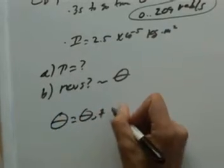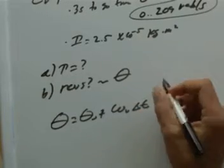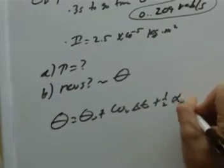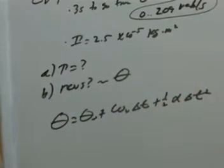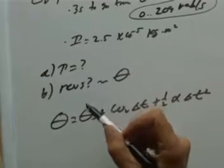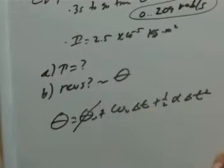We know that theta is equal to theta zero plus omega zero delta t plus one half alpha delta t squared, something like that. It's going to start at some arbitrary position of zero right here.